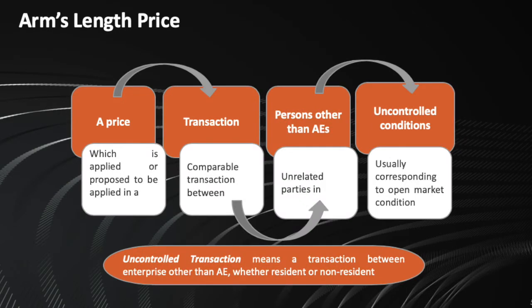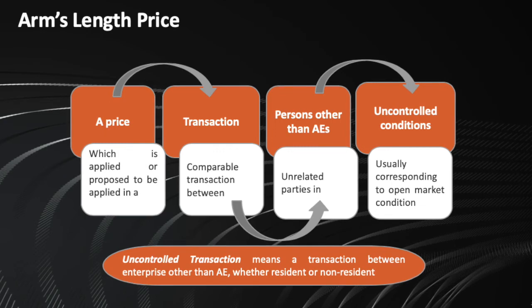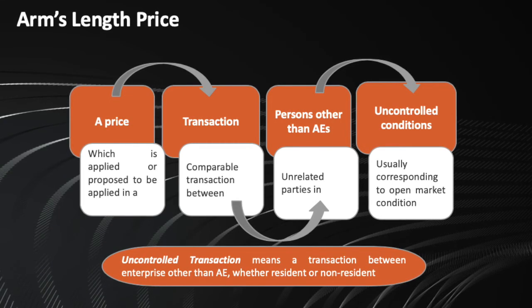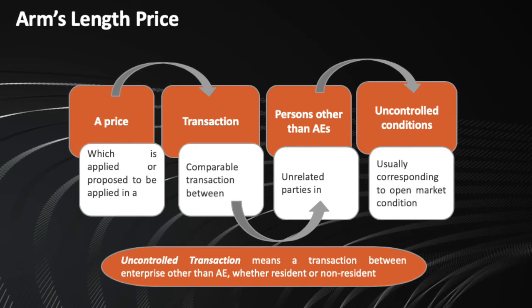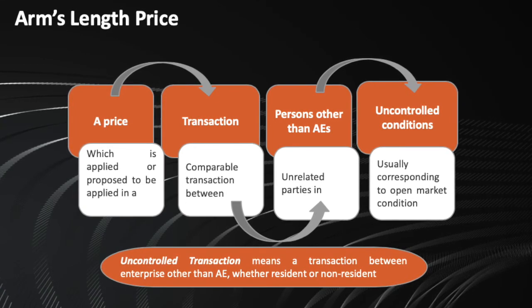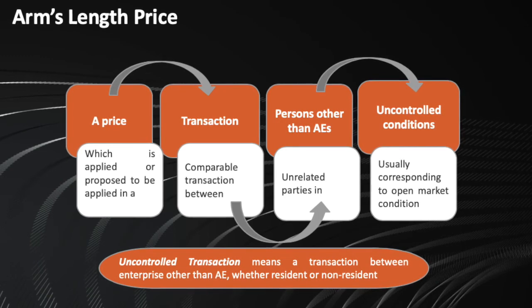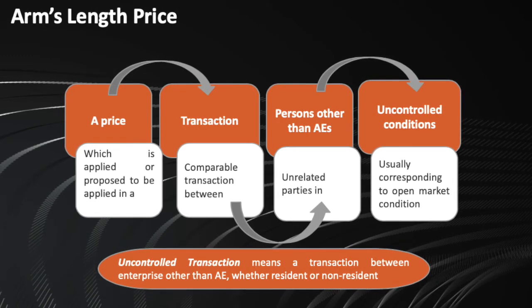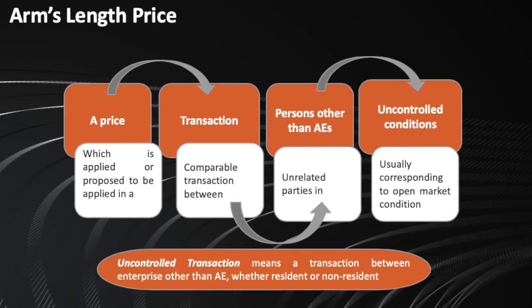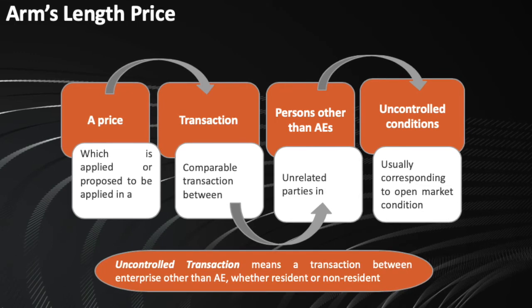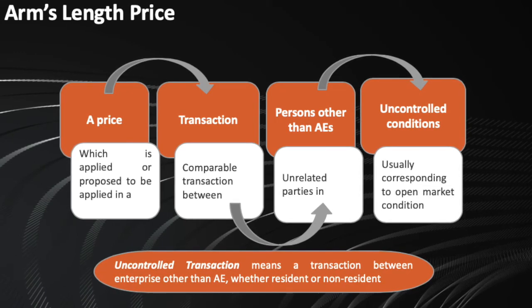Now let's move on to the last concept in the chain of the machinery, that is arm's length price. This is ultimately what we are trying to find out. And such a price could be easily defined to be a price which is either a price for a transaction that is undertaken or is proposed to be undertaken.